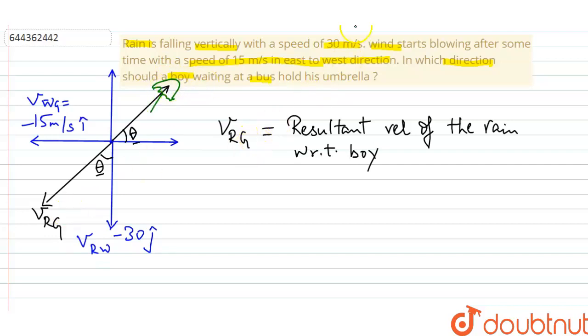So student let us find this tan theta. So in the negative x-axis and y-axis this is forming a triangle. So tan theta is what, this perpendicular distance which is equal to minus 15 and base is what, minus 30. So it will become half.